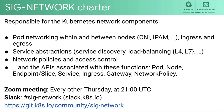Service abstractions also include load balancing at L4 and L7, network policies and access control — which is basically network security within a cluster — and all of the APIs associated with these functions, which includes pod, node, endpoint, endpoint slice, service, ingress, gateway, and network policy, to name a few.